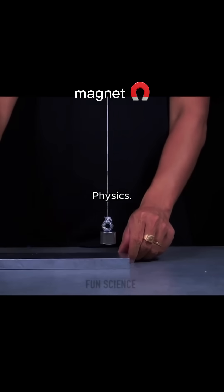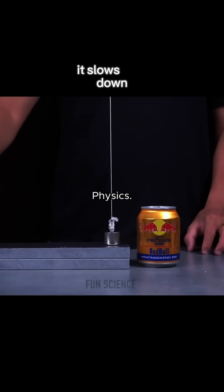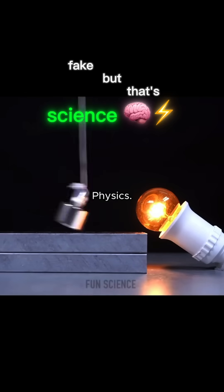Watch this swinging magnet. Now we slide in two metal blocks. It slows down and stops right before hitting the can. No contact. It looks almost fake, but that's science.